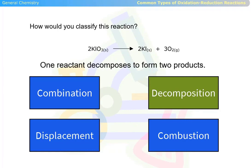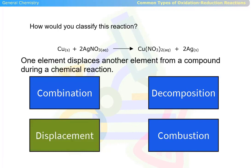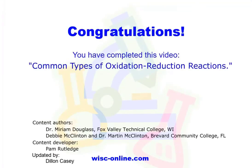And finally, how would you classify this reaction? This is a displacement reaction. Displacement reactions happen when one element displaces another element from a compound during a chemical reaction. Congratulations! You have completed this video, Common Types of Oxidation Reduction Reactions.